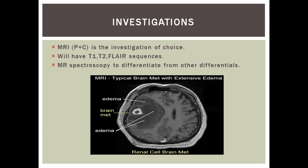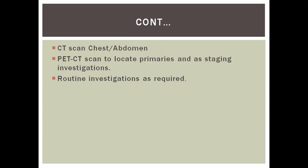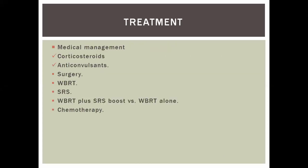Learn T1, T2, and T2 FLAIR images when reading any CNS tumor. When an MRI abnormality is found, perform staging investigations including PET-CT scan, CT chest and abdomen. Treatment for brain metastasis depends on location, number of metastases, size of individual metastases, patient performance status, whether in an eloquent location, surgical accessibility, and life expectancy.